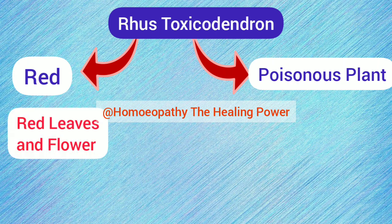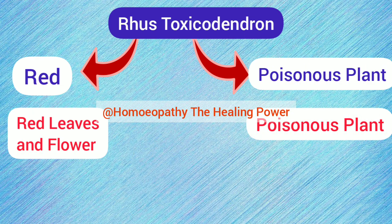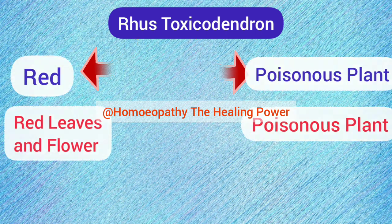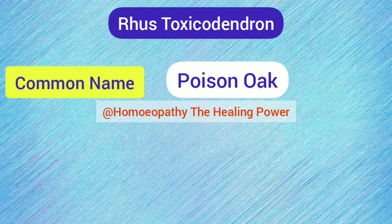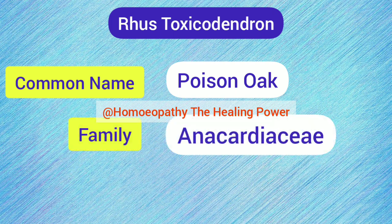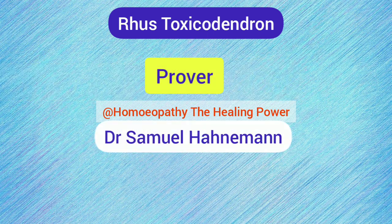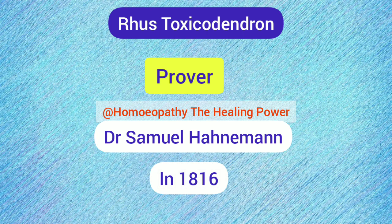The flowers and leaves of the Rhus Tox plant are red in colour, and the plant is itself a poisonous plant. The common name of this medicine is Poison Oak and it belongs to the family Anacardiaceae. This medicine was proved by Dr. Samuel Hahnemann, who introduced Rhus Tox into his homeopathic practice in the year 1816.